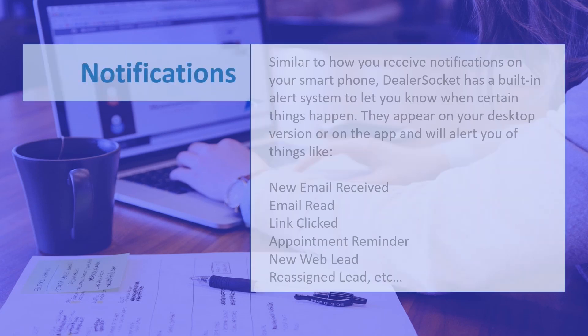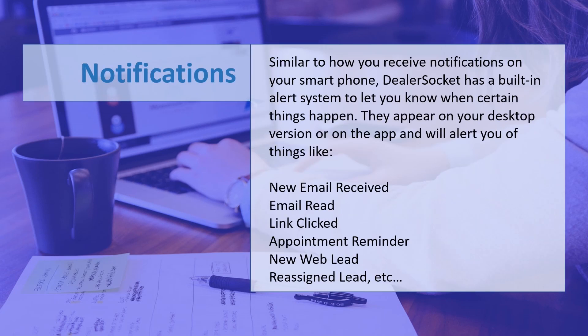Similar to how you receive notifications on your smartphone, DealerSocket has a built-in alert system to let you know when certain things happen. They appear on your desktop version or on the app, and will alert you of things like new email received, email read, link clicked, appointment reminder, new web lead, reassigned lead, and more.